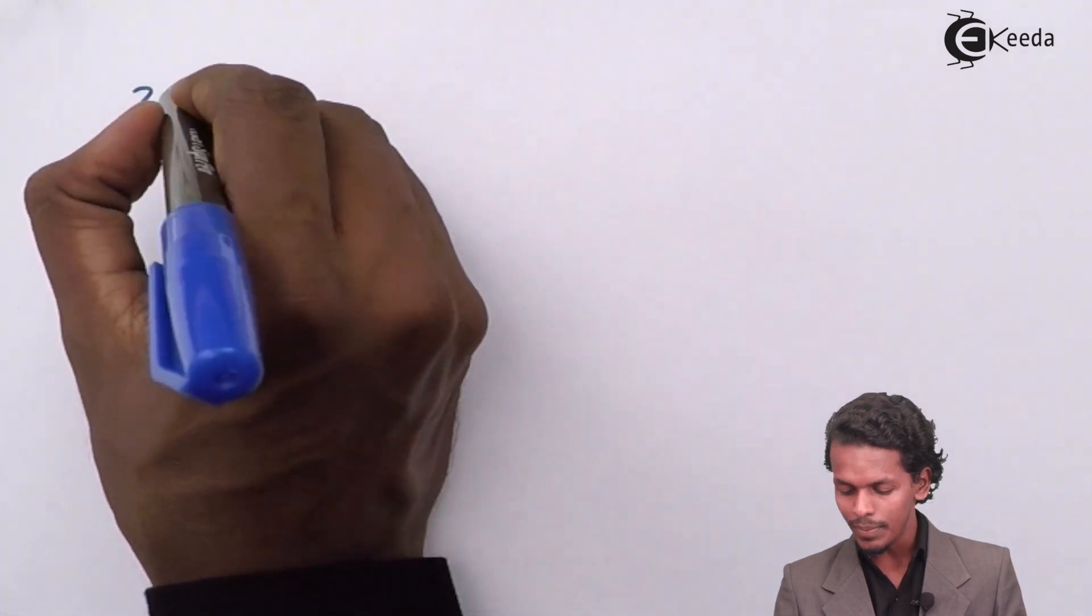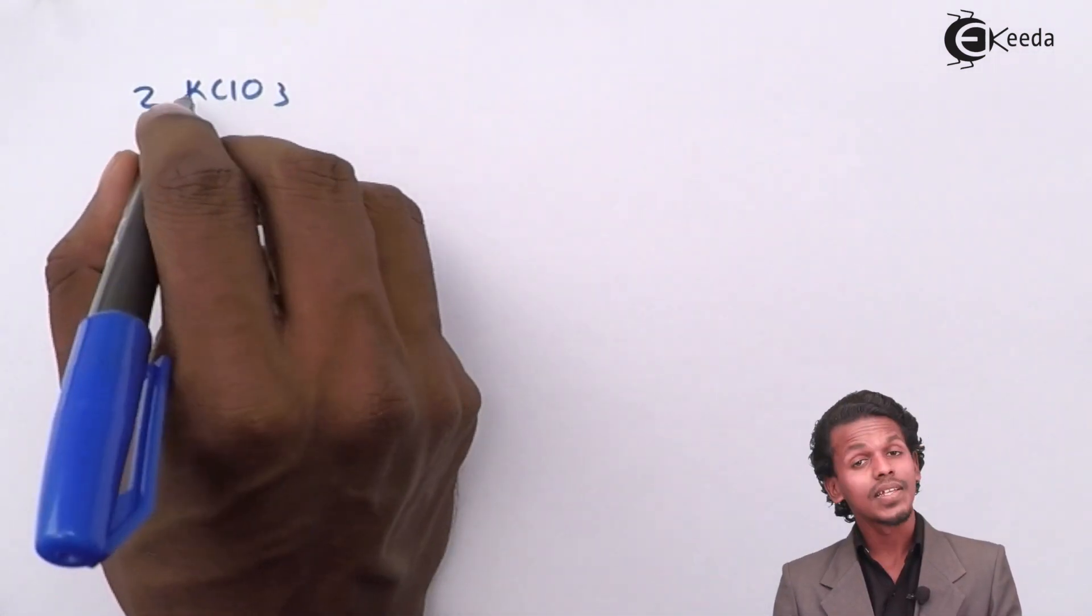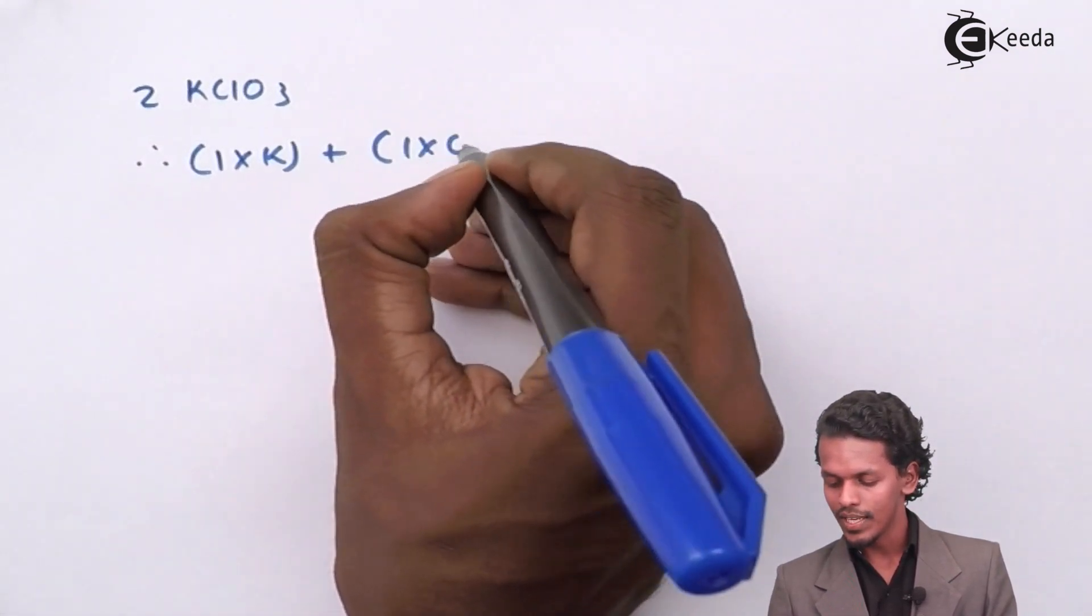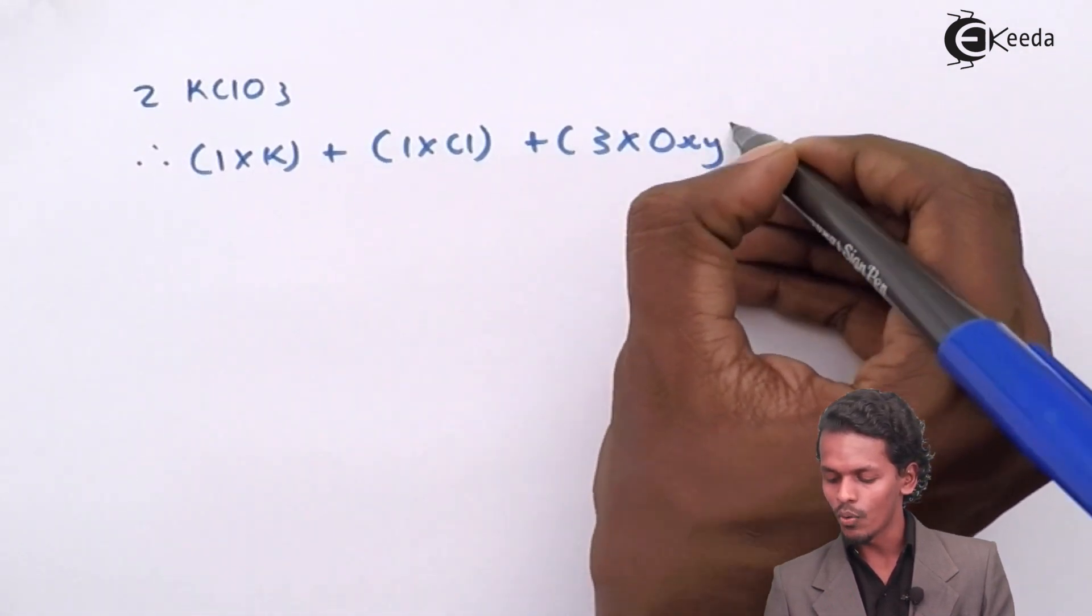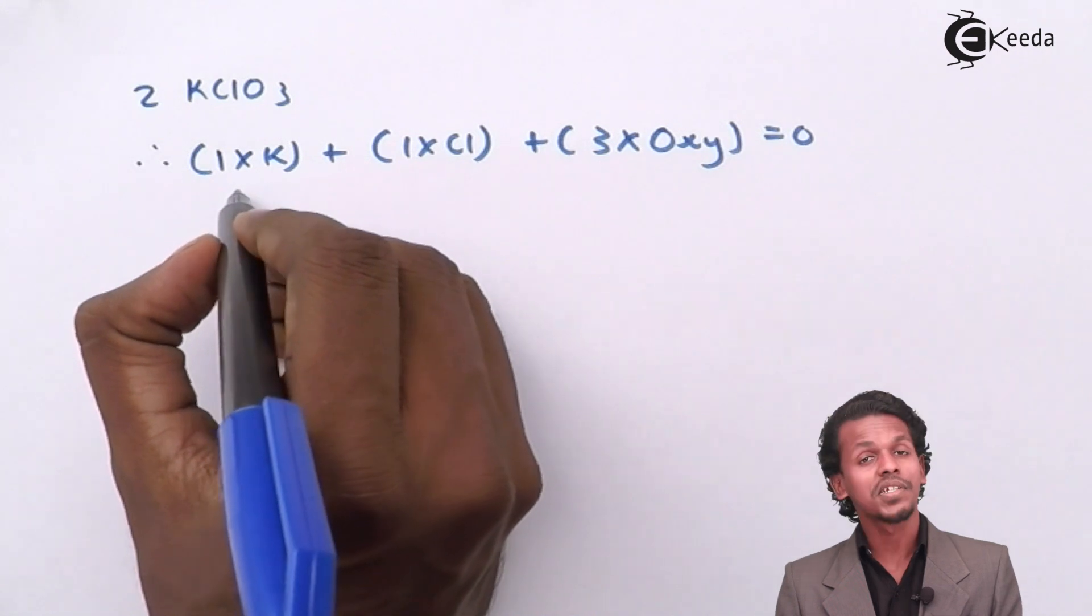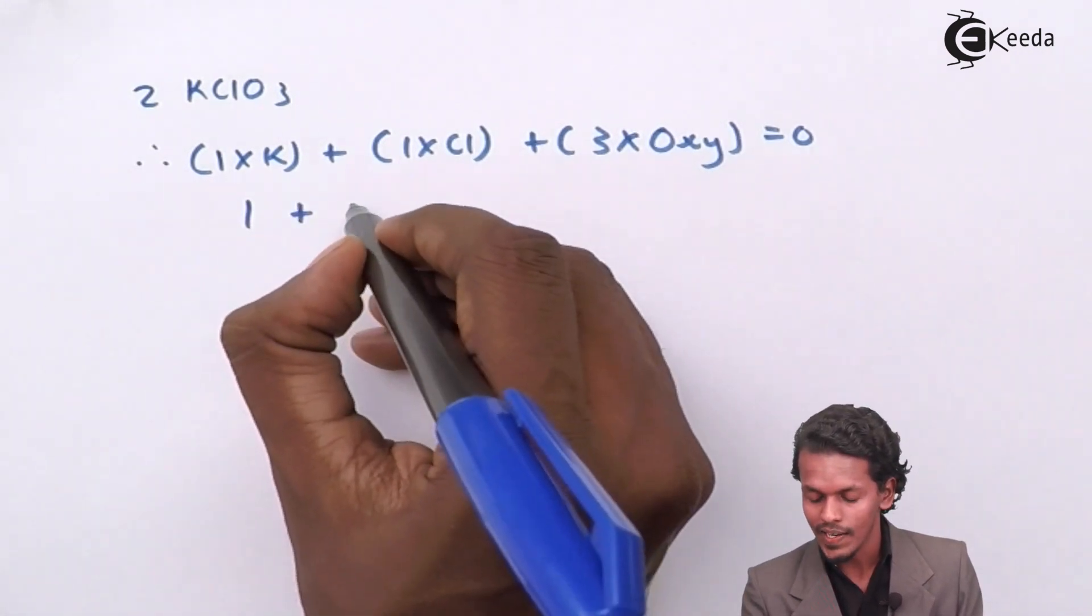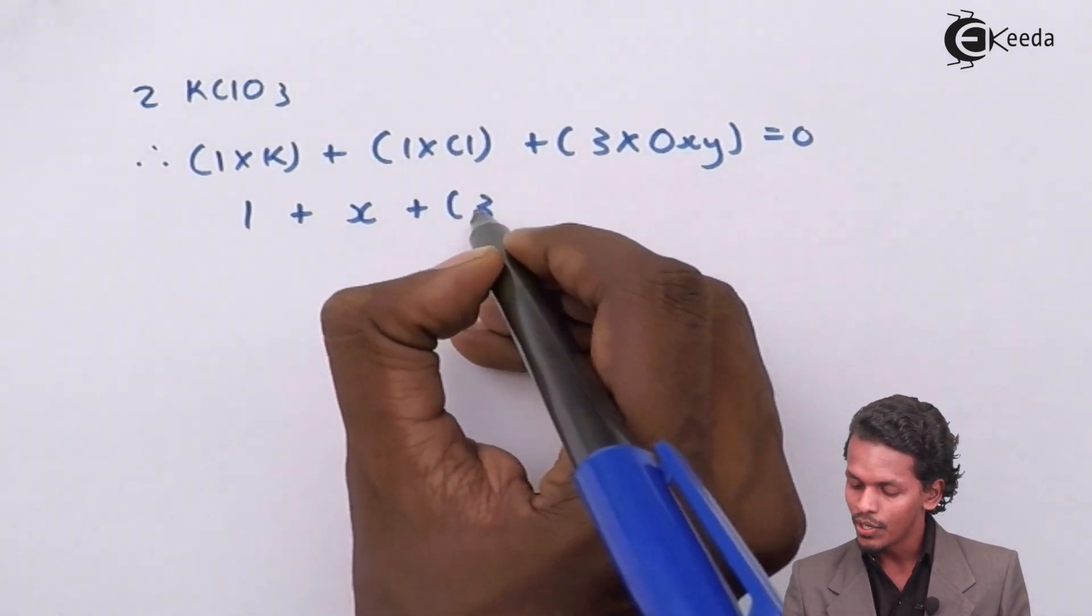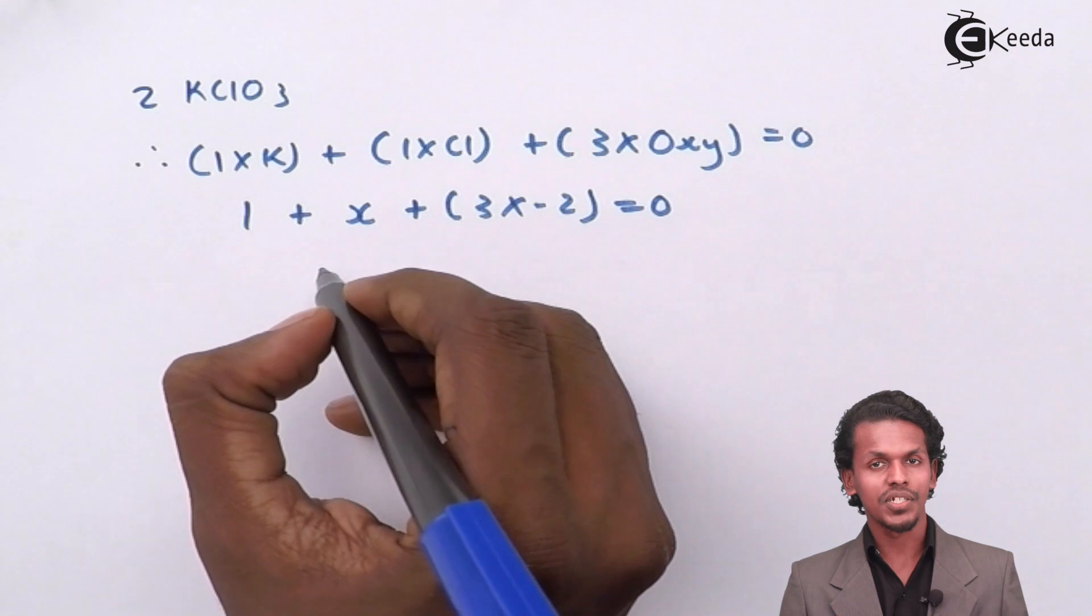So for 2 KClO3, I could write it as: K is present one time, so 1 × K + 1 × Cl + 3 × oxygen, and overall charge is 0. The oxidation number of K is +1, that of Cl is variable, so I have mentioned it as X, plus 3 × (-2), which gives the overall oxidation number